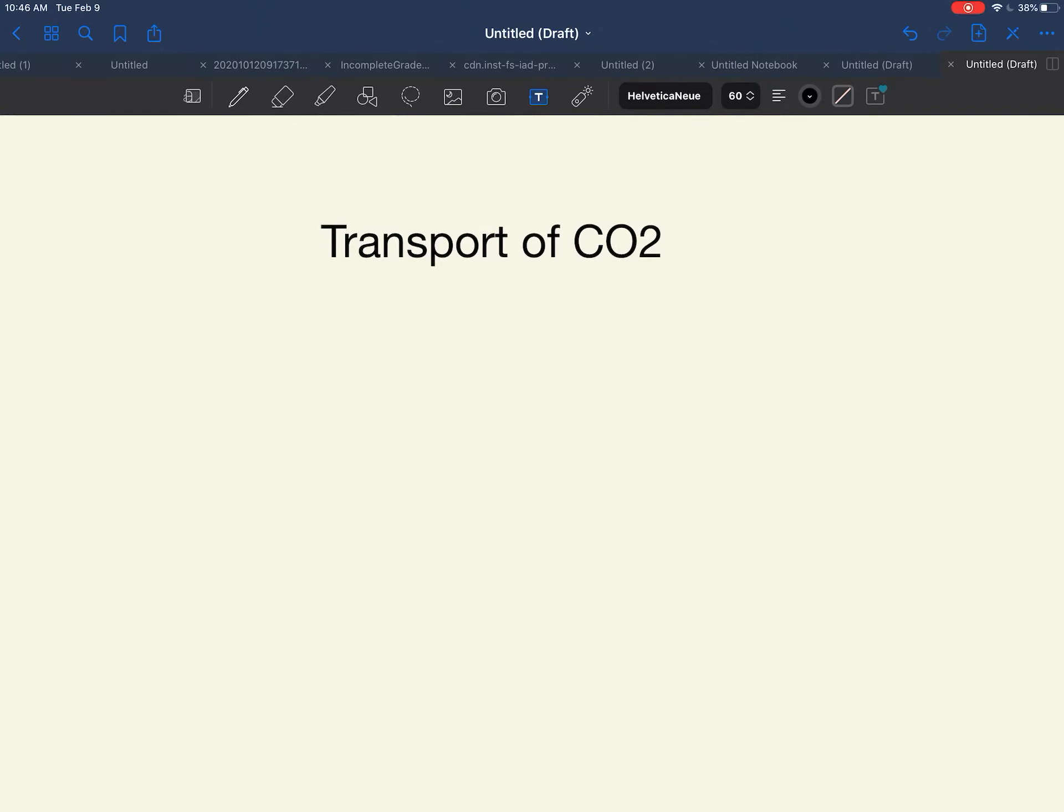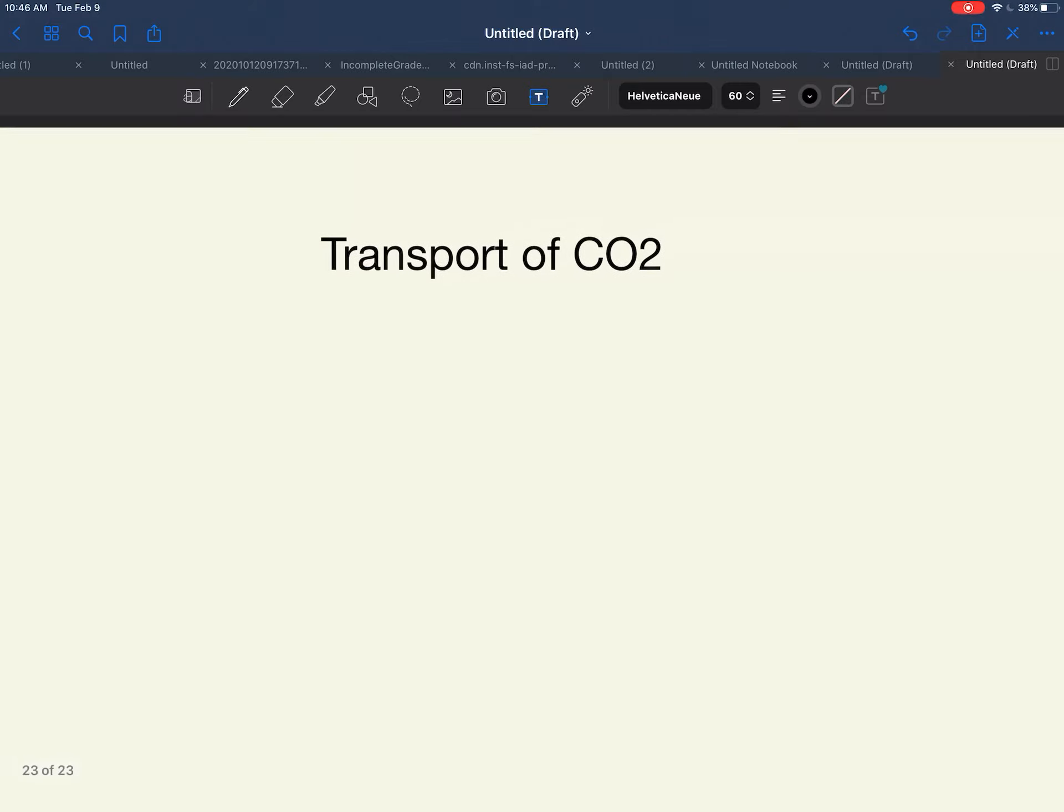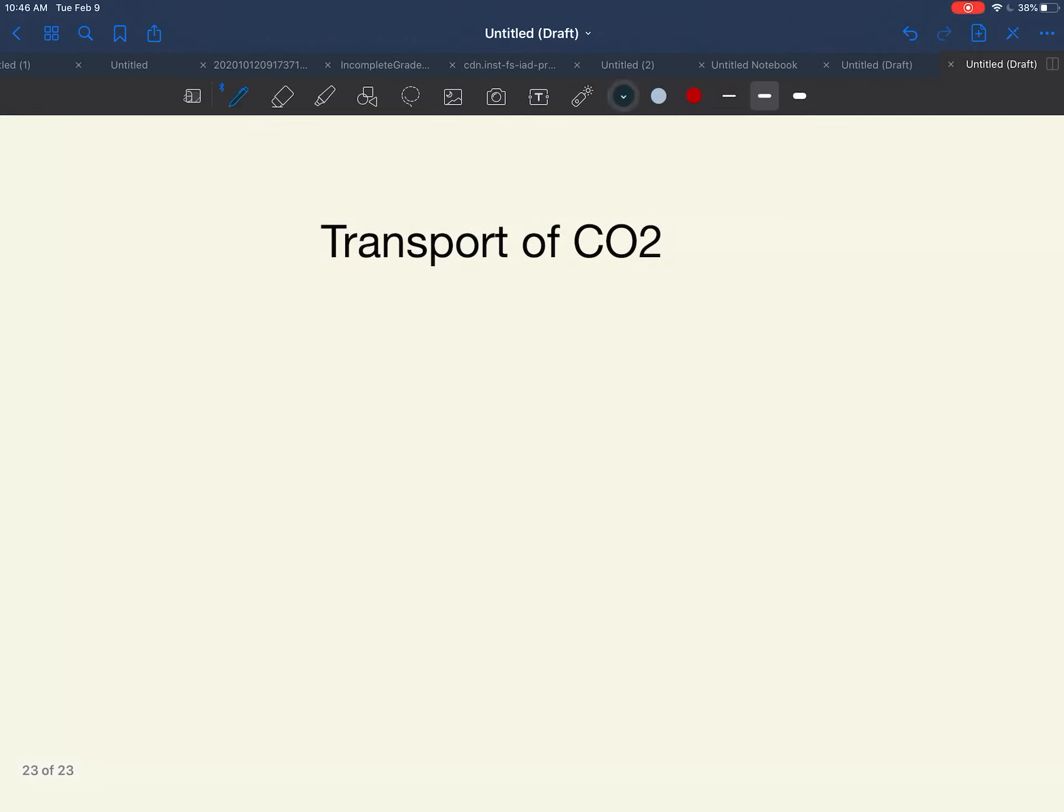So we talked about the transportation of oxygen. This is the transport of CO2, which is actually written with a little two, right? CO2, carbon dioxide. Carbon dioxide is the waste product, remember, of cellular respiration. This is what we have to breathe out, and that cellular respiration is what produces energy.